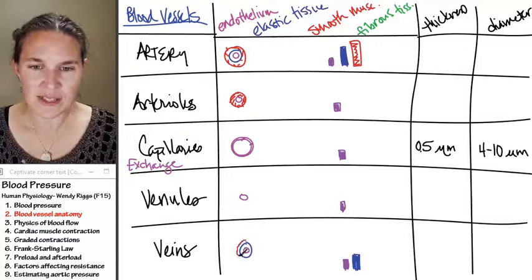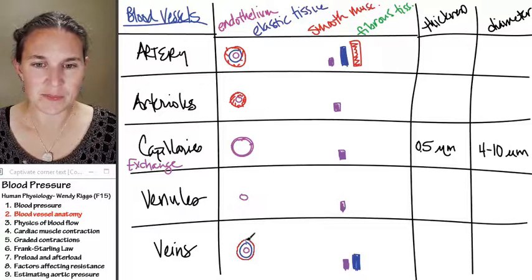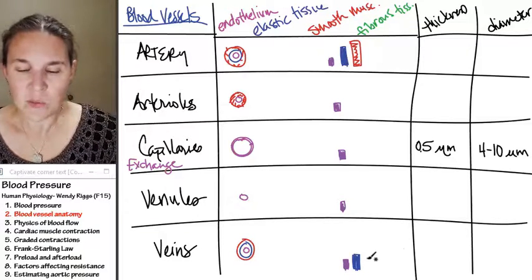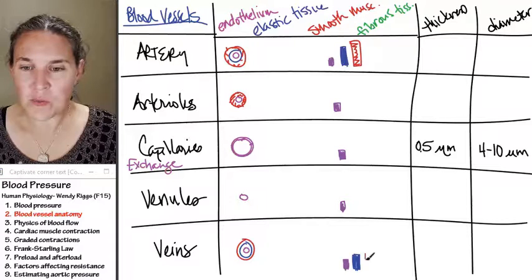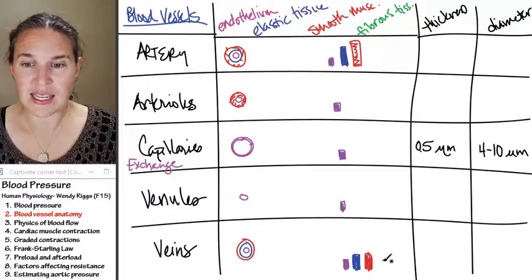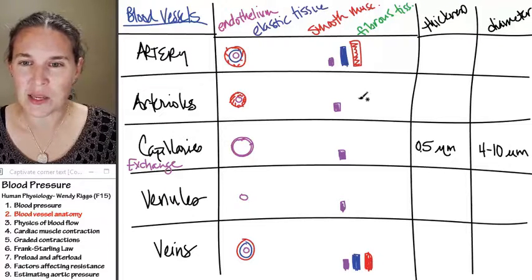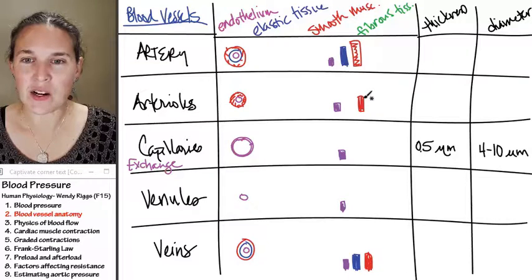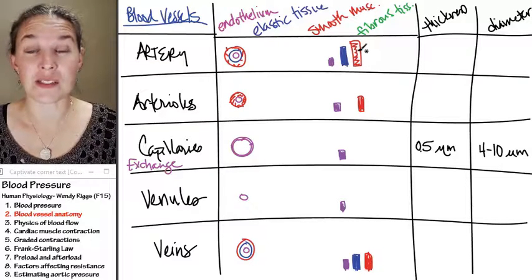Our veins do have some smooth muscle. Now, the amount of smooth muscle in my veins, which are bigger vessels, is about the same as the amount of smooth muscle in the arterioles, and it's nothing compared to the amount of smooth muscle in the arteries.